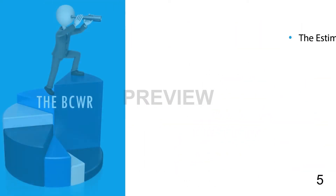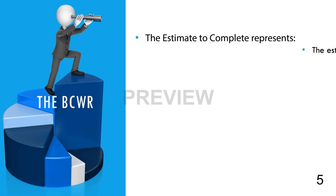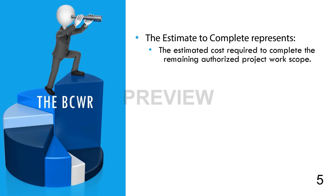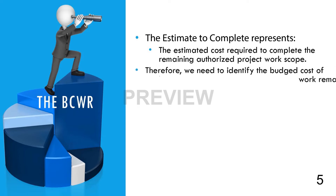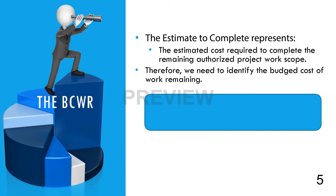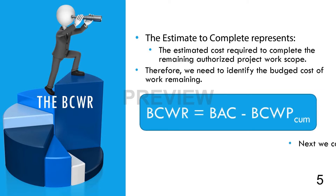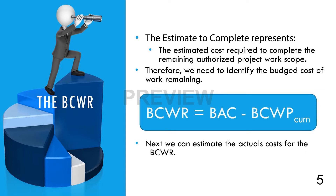The essential formula for all EACs is the cumulative actual costs on a project plus the estimate to complete the remaining work. The actual costs of work performed is simply an export from the Earned Value tool, so the more difficult part of developing an EAC is creating the Estimate to Complete, which is the cost required to complete the remaining authorized project work scope. In an EVMS, the budgeted cost of the work remaining, or BCWR, is calculated as the budget at completion less the cumulative earned value, or BCWP. This formula provides the budgeted value of that remaining work.